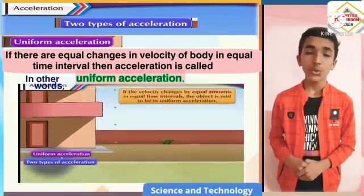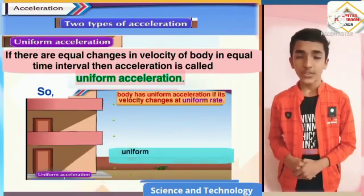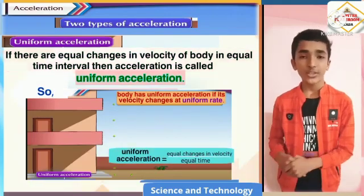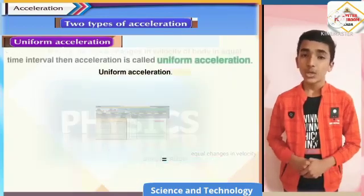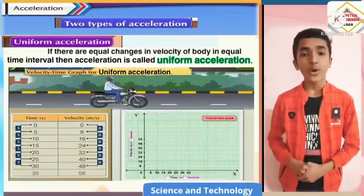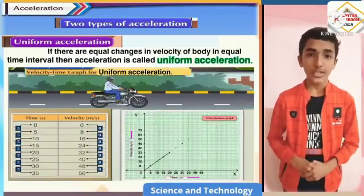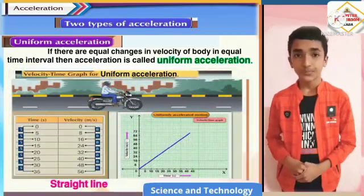Uniform acceleration is given by equal changes in velocity upon equal time interval. Note that the velocity-time graph for a body having uniform acceleration is a straight line.